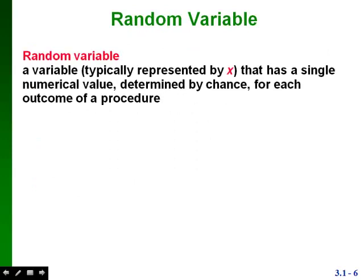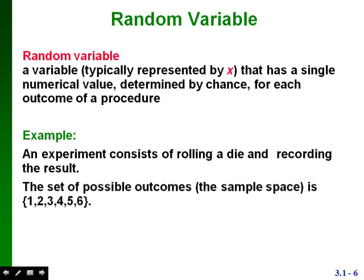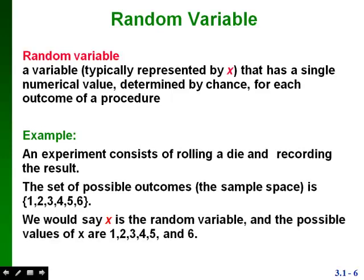A random variable is just a variable — we usually represent it by x, though sometimes other letters — that has a single numerical value determined by chance for each outcome of a procedure. The variable represents all possible values for the outcomes of an experiment. For example, an experiment of rolling a die and recording the result has a sample space of 1, 2, 3, 4, 5, 6. So x is the random variable, and its possible values are 1, 2, 3, 4, 5, and 6.